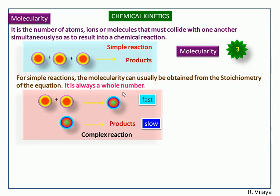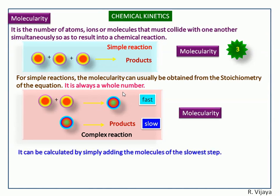Now we calculate the molecularity for this complex reaction by simply adding the molecules of the slowest step. In the slowest step, the number of reactant molecules is 1, so the molecularity is 1.